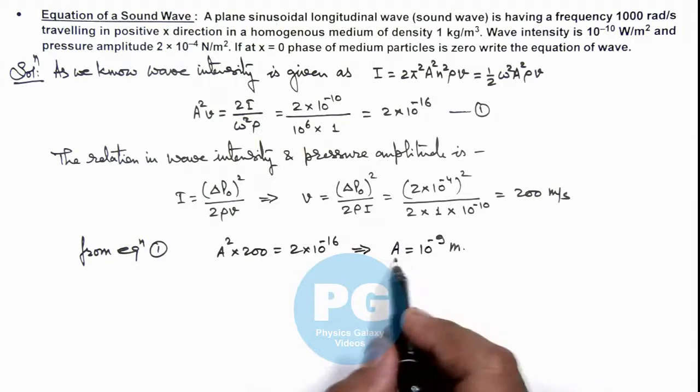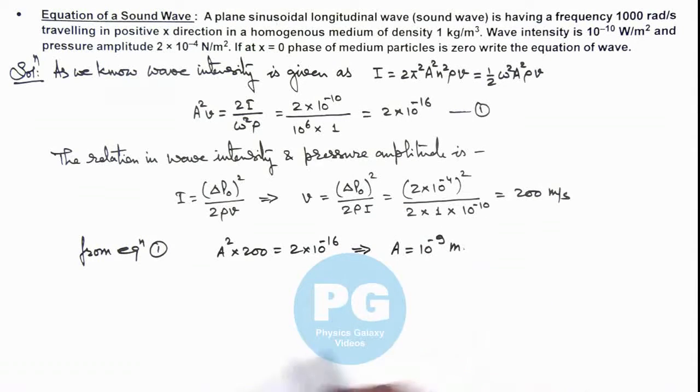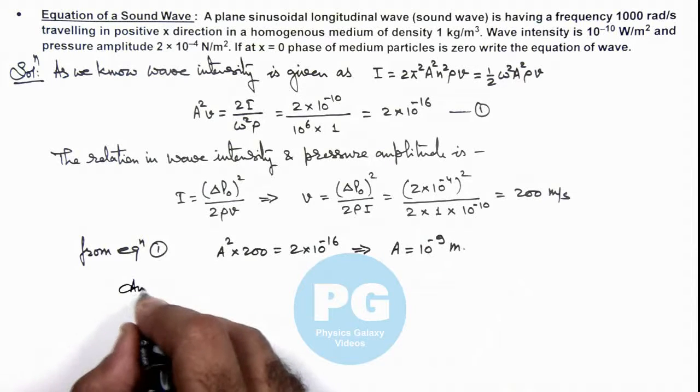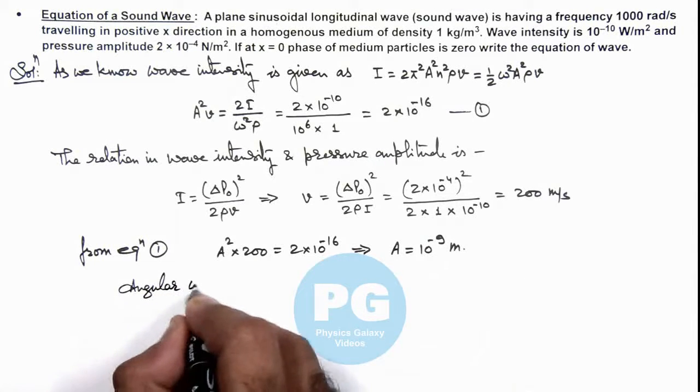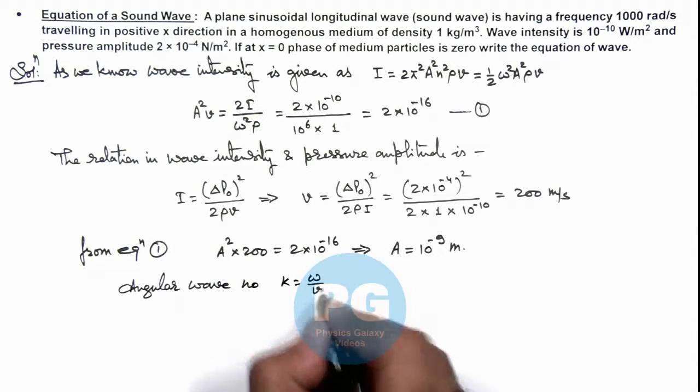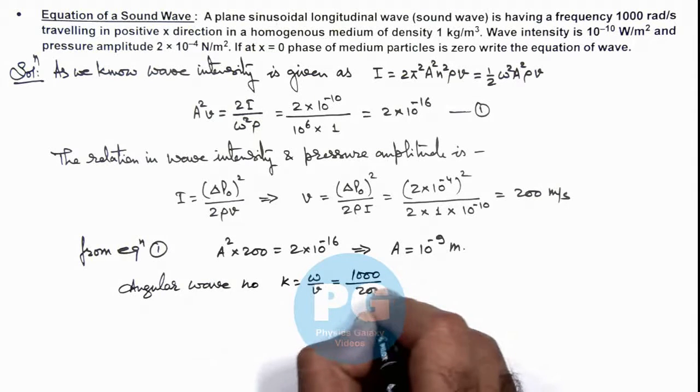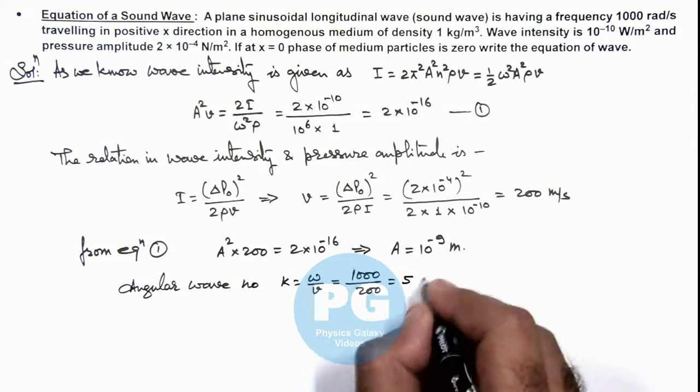As we have got the amplitude, angular frequency we are already given. Angular wave number we can calculate, which is given as ω by v. So here it is 1000 divided by 200 that is equal to 5 per meter.